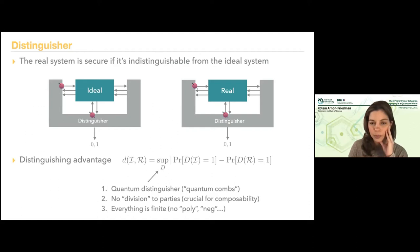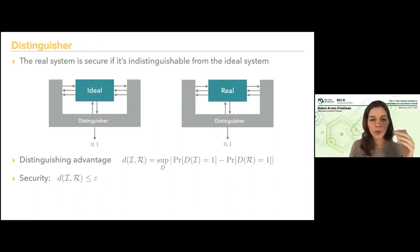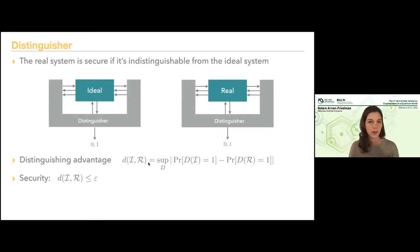This is my distinguisher, and I can define security by saying: if this distinguishing advantage is small, it means the ideal and real systems are close to one another, and then it means the system is secure. This is my way to quantify if my real system is doing what it's supposed to do, with the ideal system defining what I'm trying to achieve.